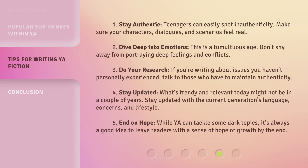Here are some tips for writing YA: 1. Stay authentic — teenagers can easily spot inauthenticity. Make sure your characters, dialogues, and scenarios feel real. 2. Dive deep into emotions — this is a tumultuous age, so don't shy away from portraying deep feelings and conflicts. 3. Do your research — if you're writing about issues you haven't personally experienced, talk to those who have to maintain authenticity.